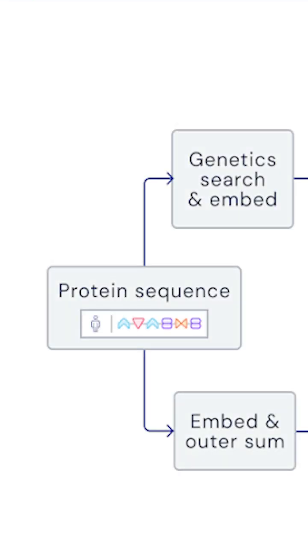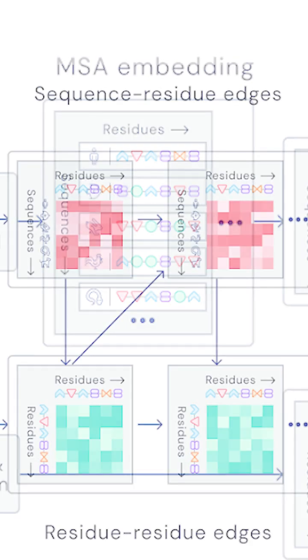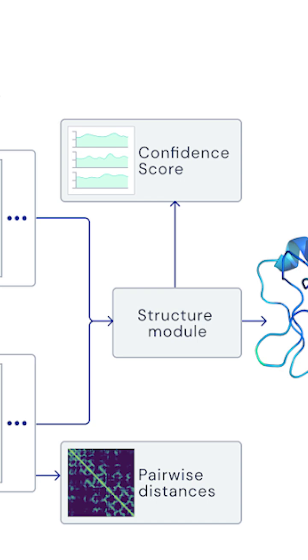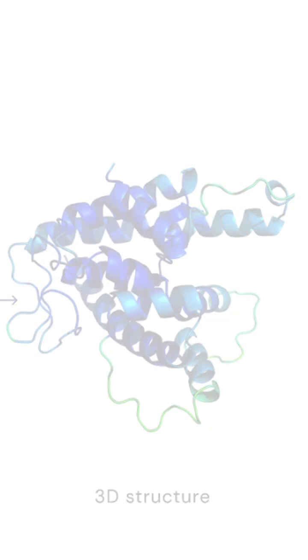To summarize how it works, AlphaFold uses deep learning and vast data sets of protein sequences to predict 3D structures from a sequence of amino acid chains encoded in our DNA.